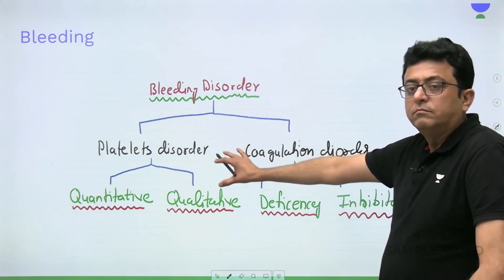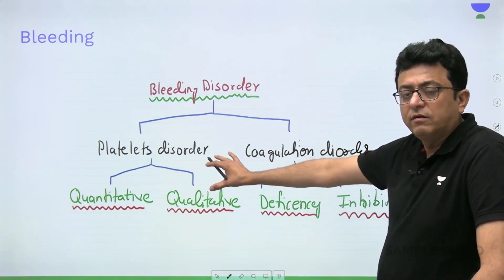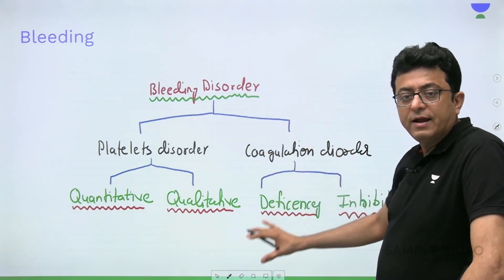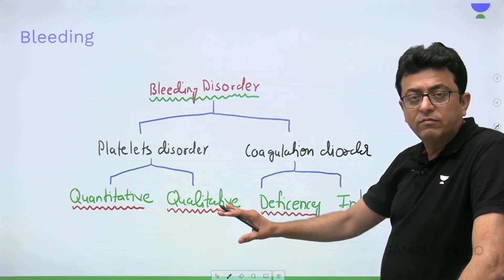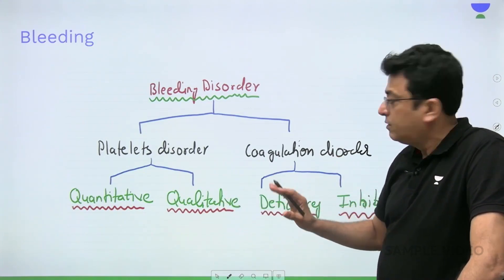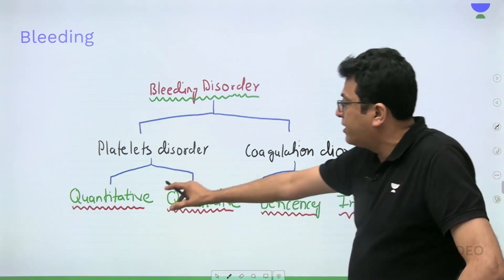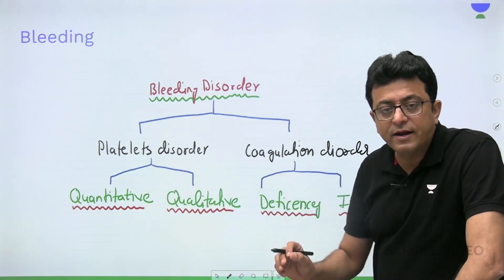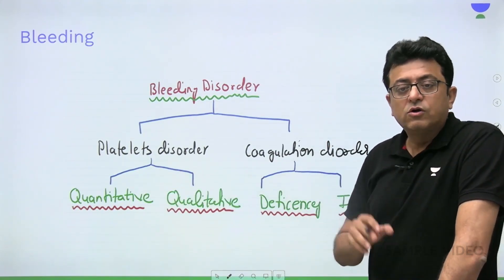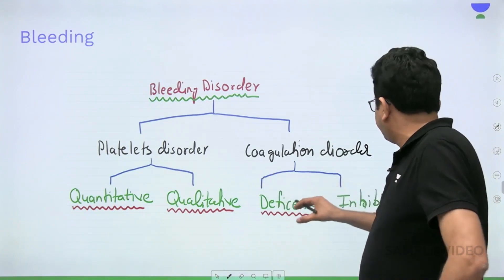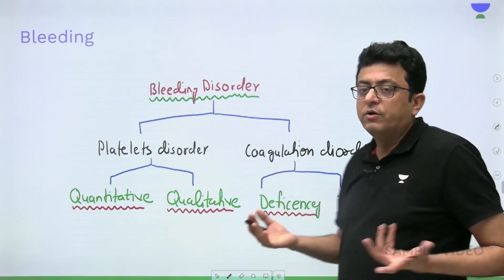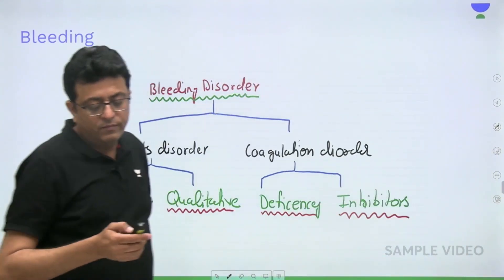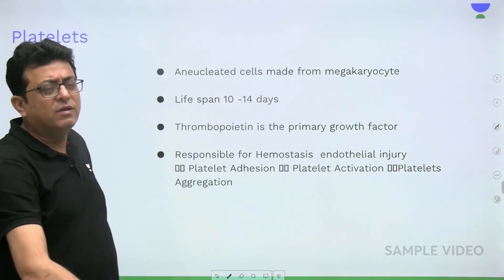Bleeding disorders are classified into platelet disorders and coagulation disorders. Platelet disorders are quantitative — where platelet number is reduced — or qualitative — where platelet function is impaired. Coagulation disorders occur due to deficiency of clotting factors or due to inhibitors.